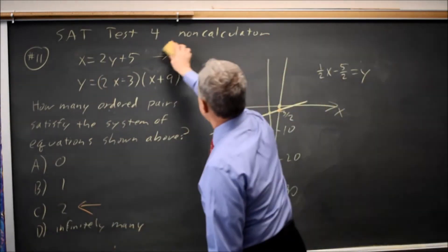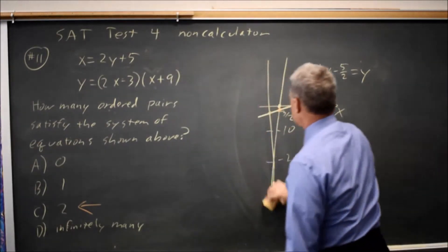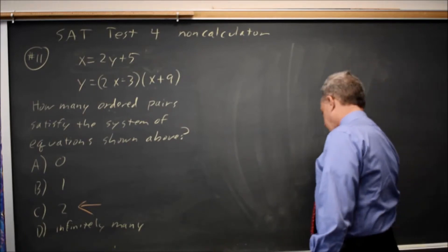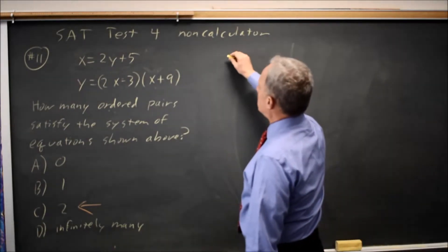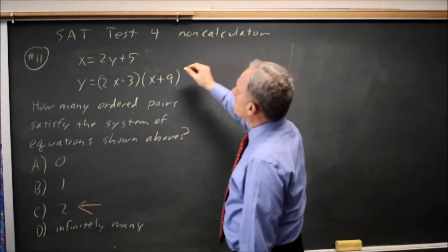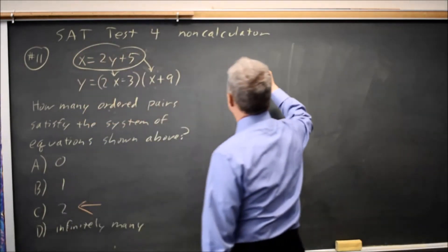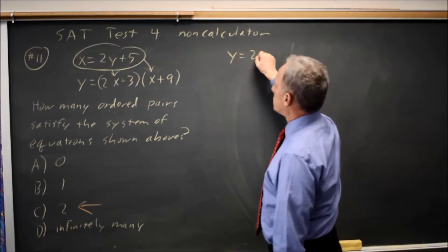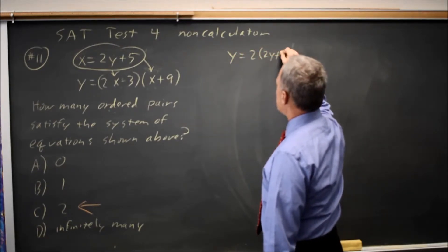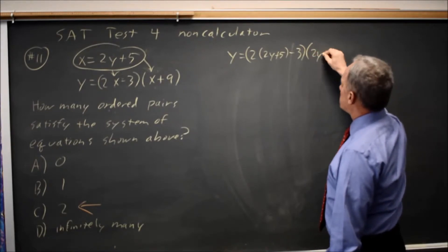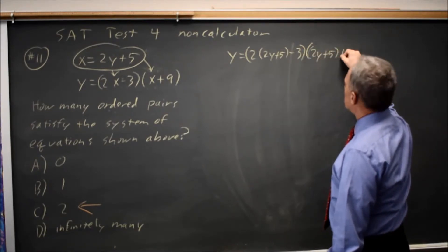But let's do this algebraically as well. Substituting the x expression in for x in my quadratic equation, I have y equals twice 2y plus 5 minus 3 times 2y plus 5 plus 9.